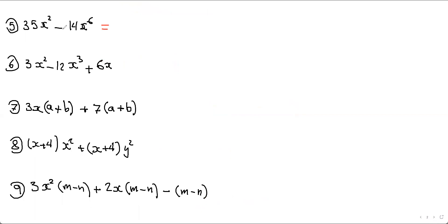For the expression with 35 and 14, the greatest number you can take out is 7. The variable factor is x², since that's the lower exponent between x² and x⁶. Opening brackets: 35 divided by 7 is 5, x² divided by x² cancels; minus 14 divided by 7 is 2, and x⁶ divided by x² is x⁴.